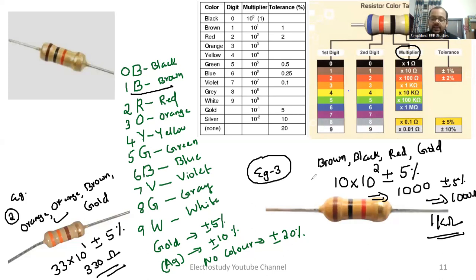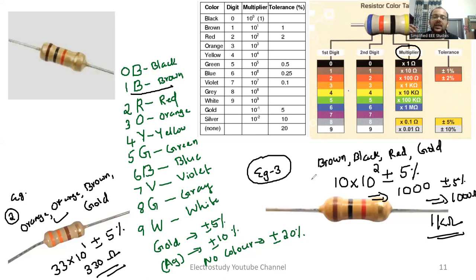In this session I have discussed why color code is required. Color code is a technique to identify the value of unknown resistance, where the value is available in the form of different colors. For convenience, manufacturers never write the value on the body of the resistor — you get it in the form of colors. Another method is to use a digital multimeter in ohm mode to measure resistance, but color code is a universally accepted method that will be really helpful in your electrical or electronics lab.